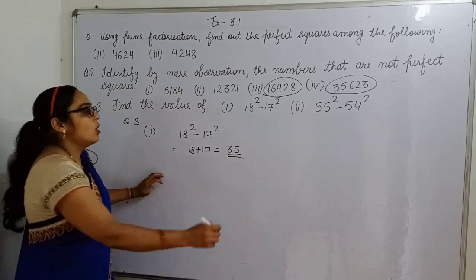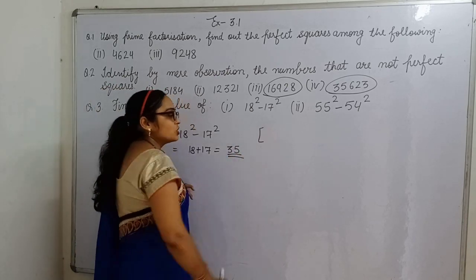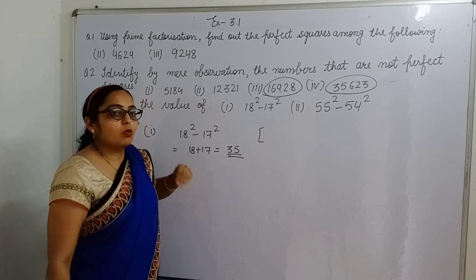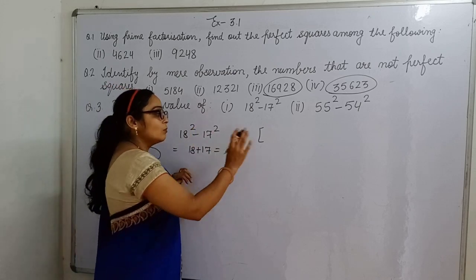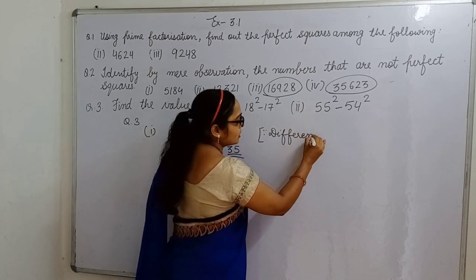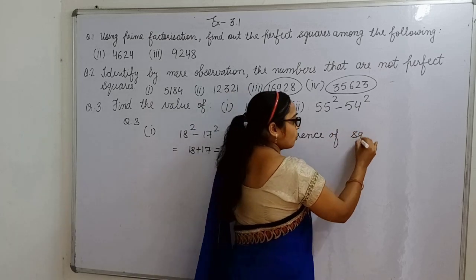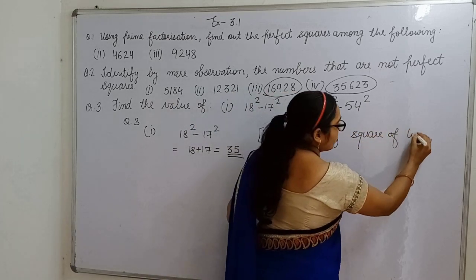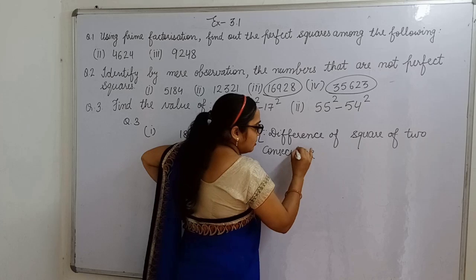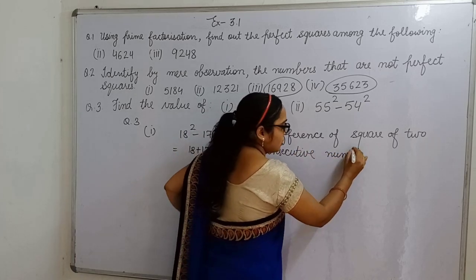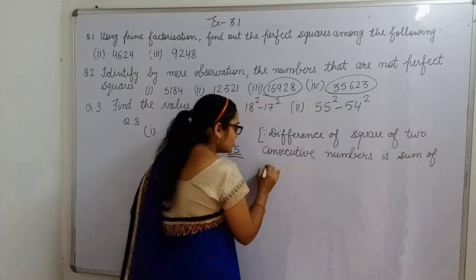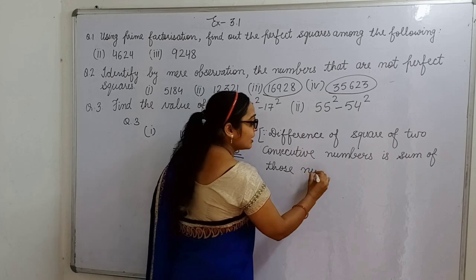Just you have to write down this. Aur aap yahaan ye property mention bhi kar sakte ho, aap starting mein mention kar do, then no need to write in both the parts. Jitne bhi parts diye hain, then no need to write. Bas aap yahaan property mention kar do: Difference of square of two consecutive numbers is sum of those numbers. Jo number diye hue hain, bas unka sum karna hai.